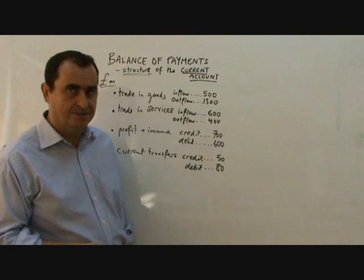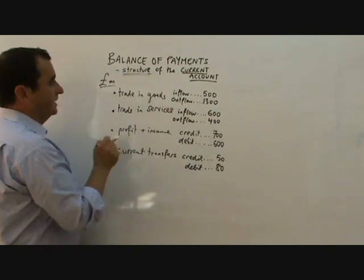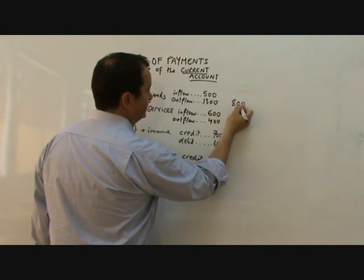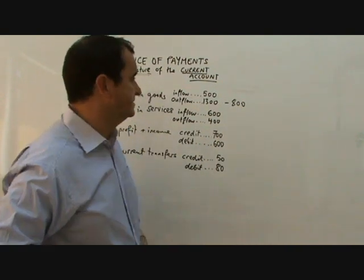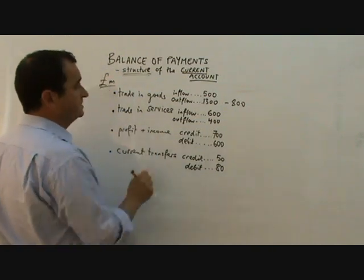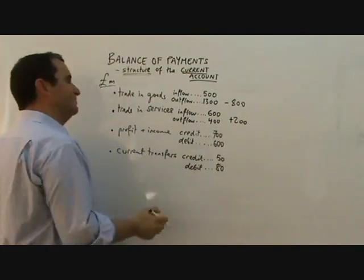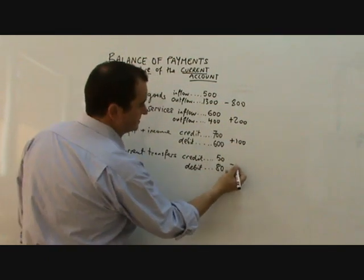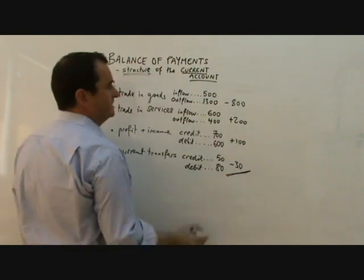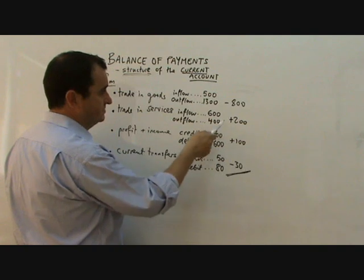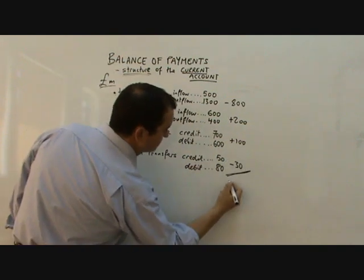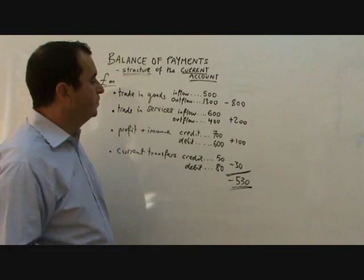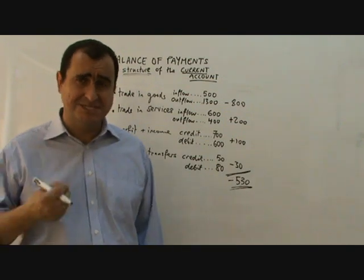Each component here could be positive or negative. Generally for Britain, trading goods comes out as negative — that's minus 800. Trading services for the UK is generally positive, but not big enough to cancel out the deficit in trading goods — plus 200. Profit and income is plus 100. Current transfers is minus 30. Combining all of these: minus 800 plus 200 is minus 600, minus 500, minus 530. That would indicate that more money is flowing out of the UK than is flowing in — it would be a current account deficit.